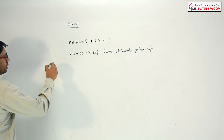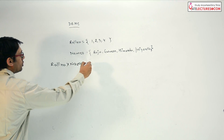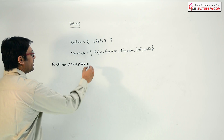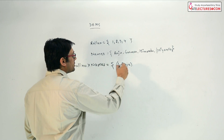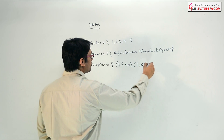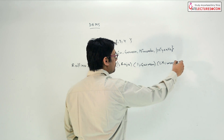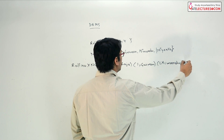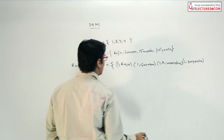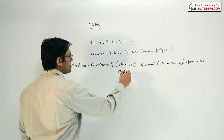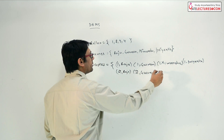Now, if I do roll number cross product with names, we are going to get ordered pairs which are: (1, Raju), (1, Gurveen), (1, Himanshu), (1, Priyanka), (2, Raju), (2, Gurveen), (2, Himanshu), and so on for all combinations.